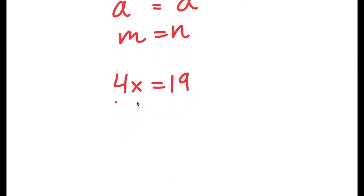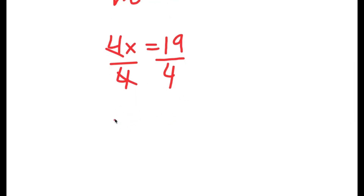Now we have a simple equation here. All I have to do is divide both sides by 4, and I get x is equal to 19 over 4.